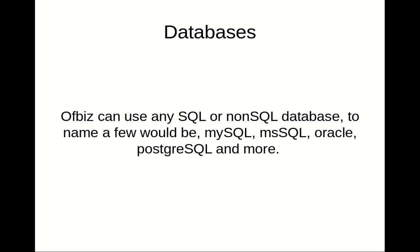OFBiz comes out of the box with its own database called Derby — an Apache-created, Java-written, Java-based database. Derby is used for demonstration and testing purposes. But once you want to go full production with OFBiz, you can use any type of database you want, whether open source or commercial. Some of the more popular ones are MySQL or PostgreSQL. For commercial databases, you can use Microsoft SQL or Oracle. There is no limit to which type of database you want to implement with OFBiz.